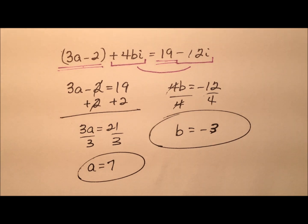So to summarize, two complex numbers will be equal to each other as long as their real parts are the same and their imaginary parts are the same.